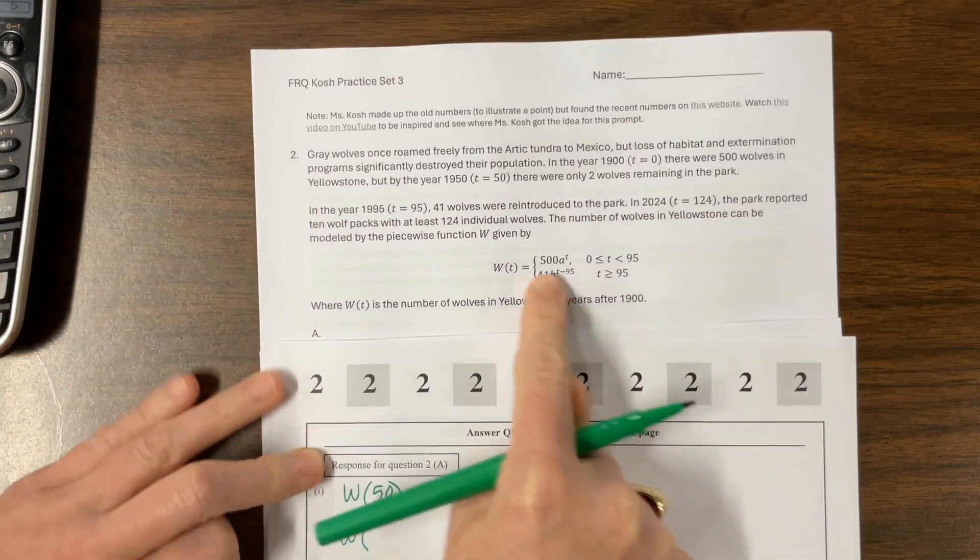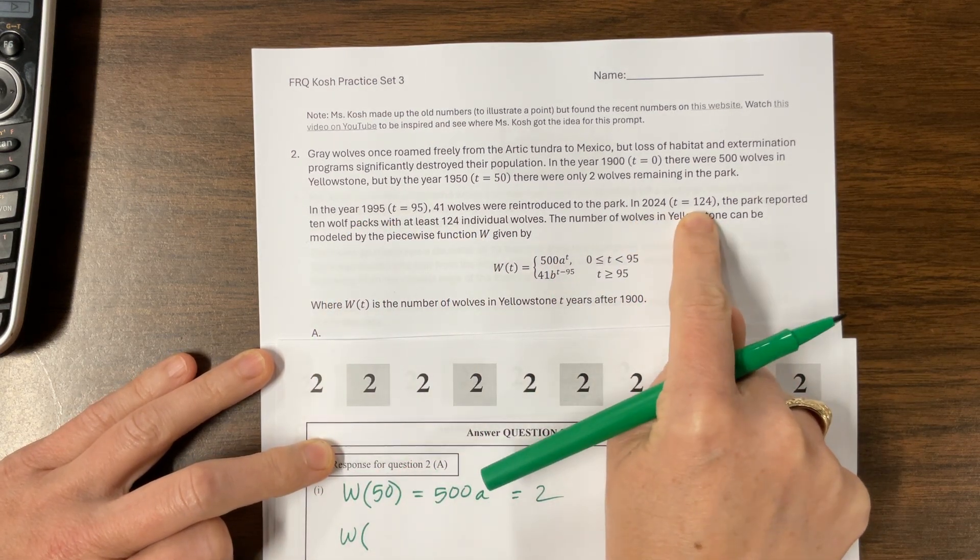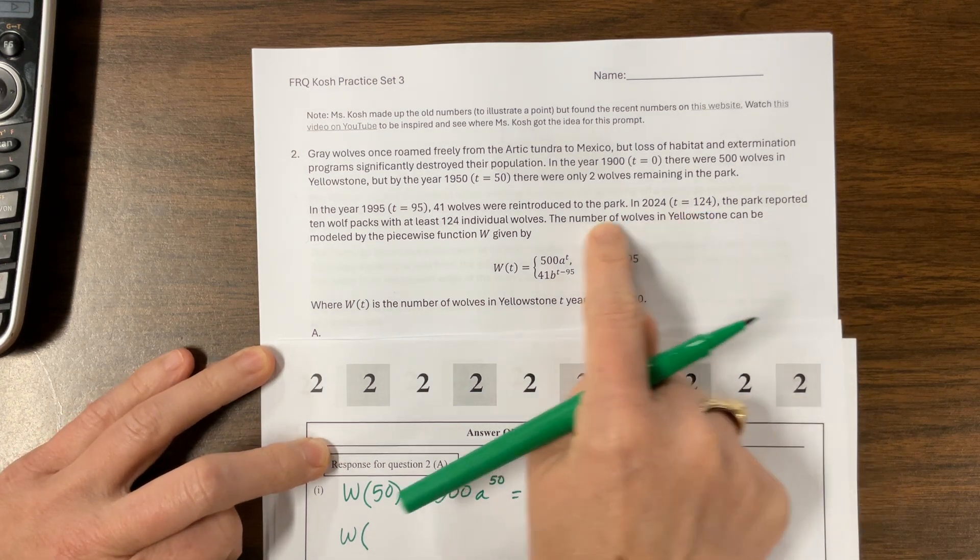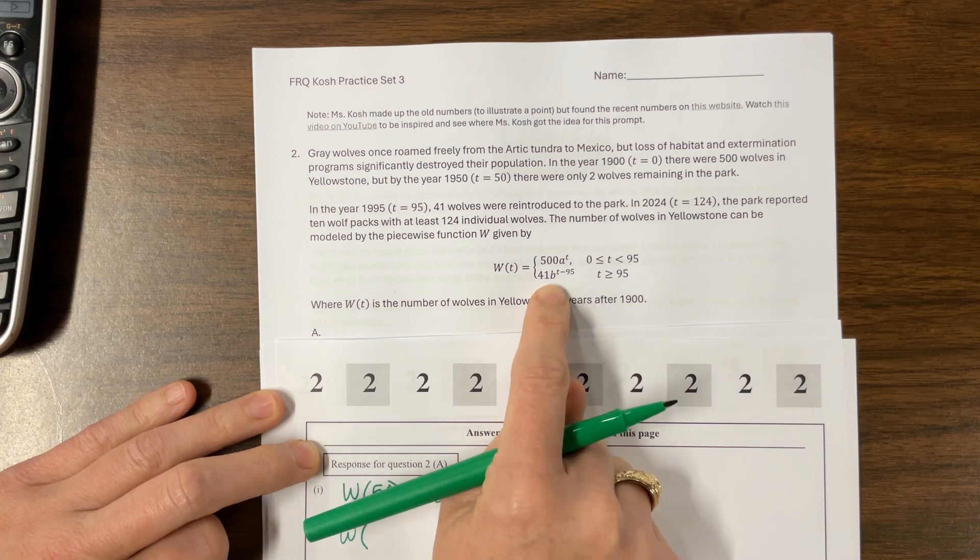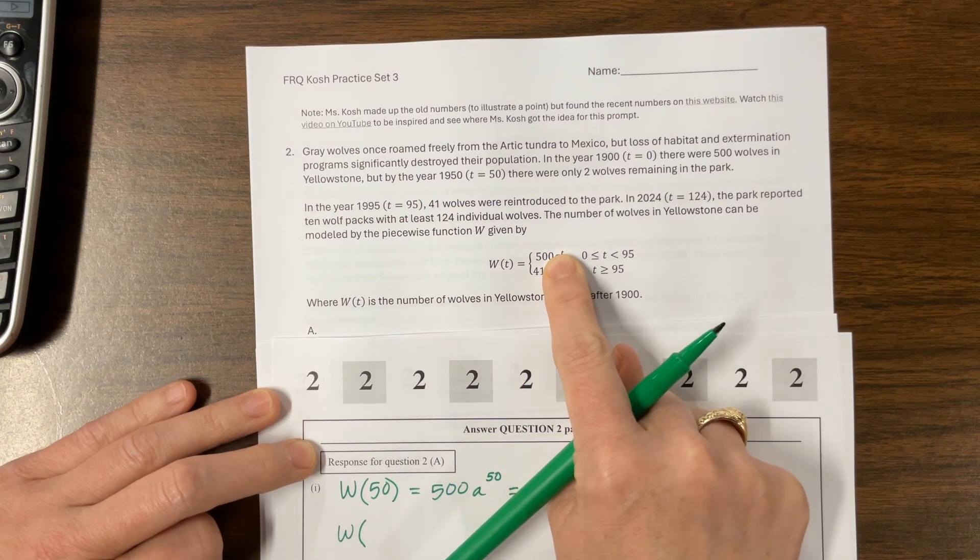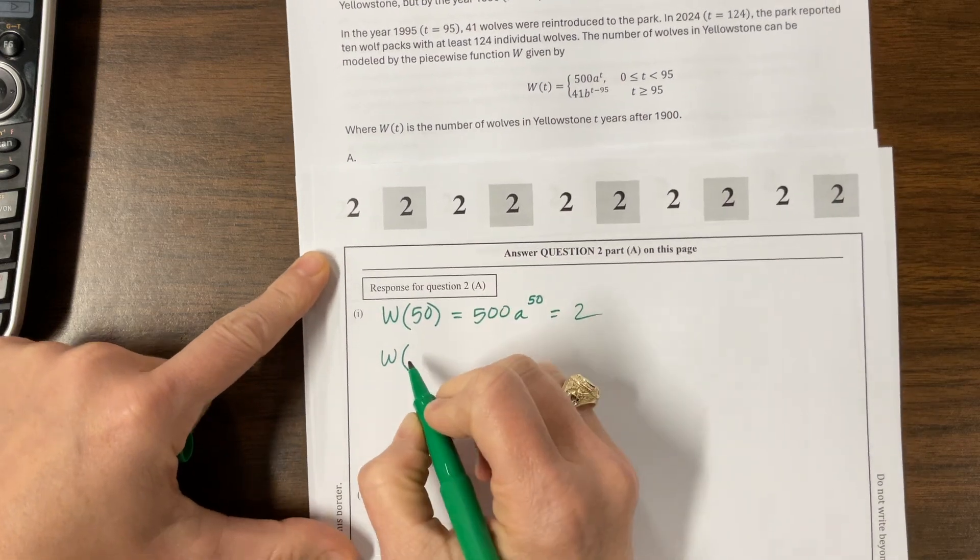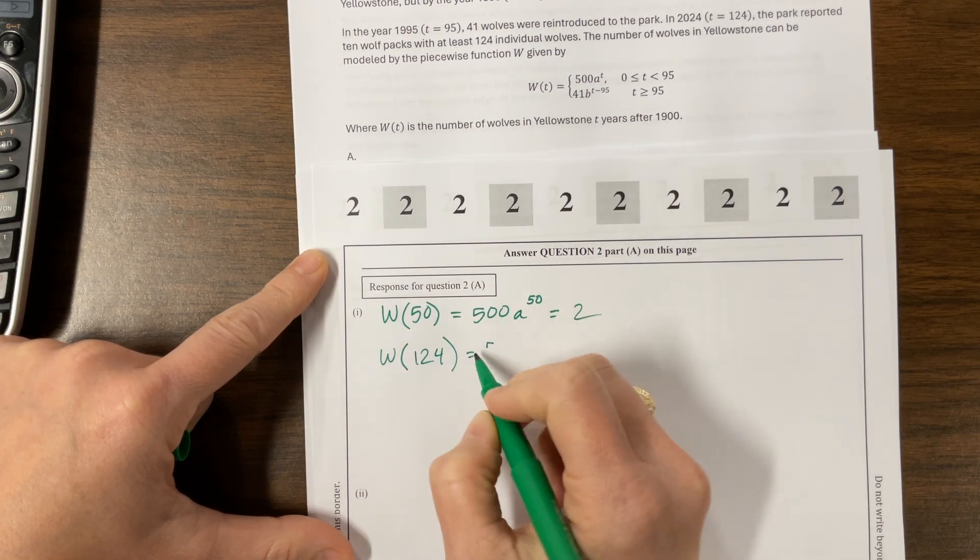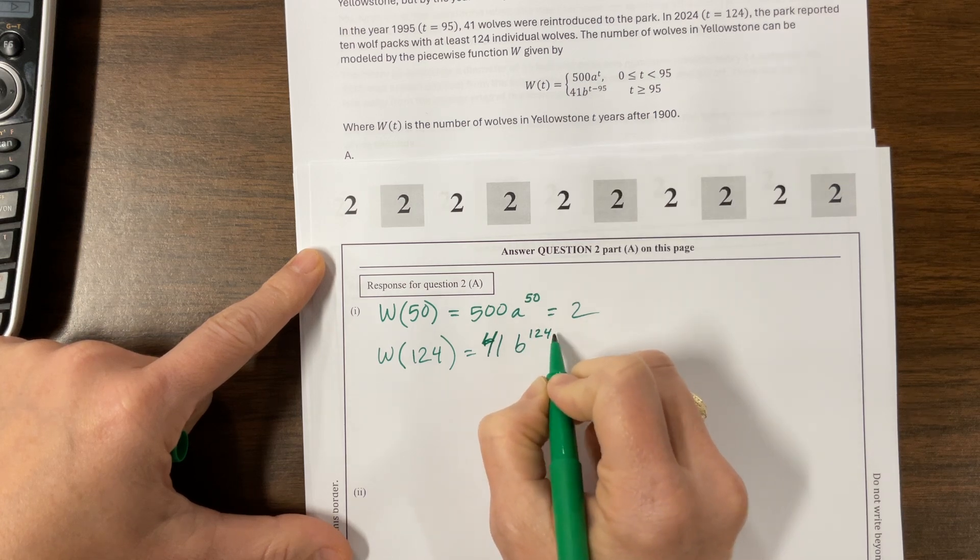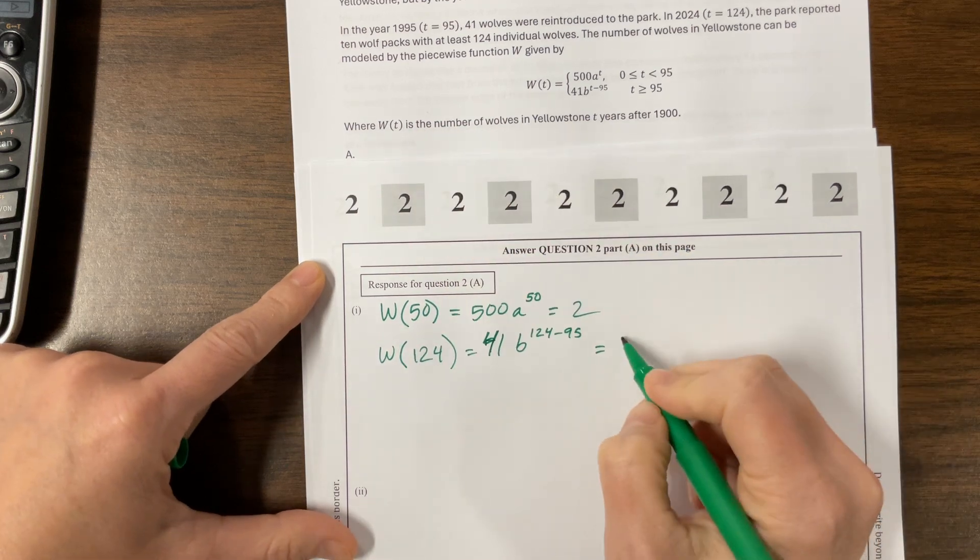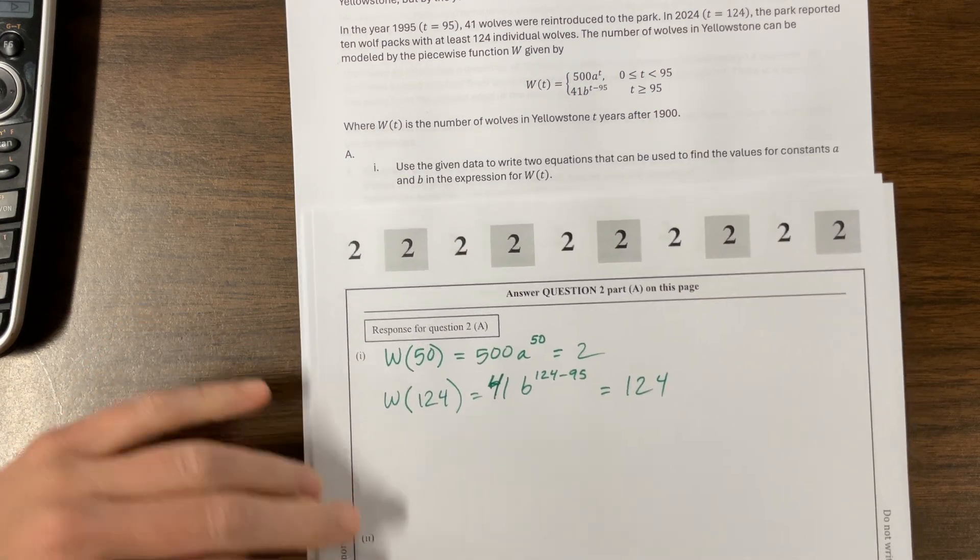The other equation is, okay, we need to solve for B. Well, notice here, I give you information about when T equals 95, so about the year 1995, but I also give you information about the year 2024, which is when T equals 124. Notice in this, if I plug in 95, I get 95 minus 95, which is 0. So then I get B to the 0 power, which is 1, which does not, it's not false. It just doesn't help us solve that equation. So this first part is not going to be beneficial to us, but the second part is. So what we're going to do is we're going to say W(124) is equal to, nope, wrong equation, 41, I started to plug it back into the first part. That would be wrong, times B to the (124 minus 95), and this was equal to, they told us there were 124 wolves at that point. Okay, so part A just said write two equations. We did that, and now let's solve them.